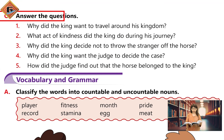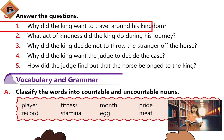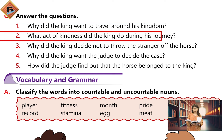Now, answer the questions. Question one: the king wanted to travel around his kingdom to know how well his kingdom was being run. Question two: what act of kindness did the king do during his journey? The king gave a lift to a stranger.